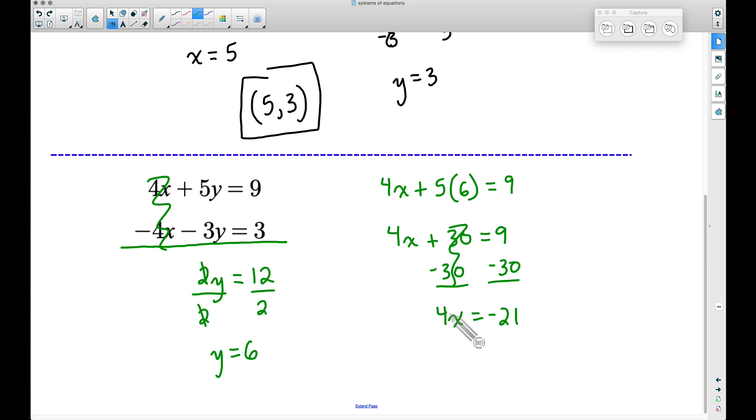Now sometimes you will get fractions for answers or decimals. Notice when we divide both sides by 4, we get x equals negative 21 over 4. And if we were to get a decimal here, it's not a bad decimal. We actually get negative 5.25 if you just take negative 21 divided by 4.